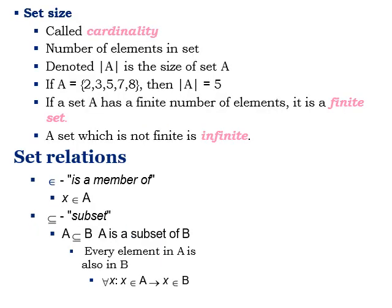Cardinality refers to the number of elements in a set, denoted using absolute value-like symbols representing the size of a set. For example, if A = {2, 3, 5, 7, 8}, then the cardinality of A equals 5. If a set A has a finite number of elements, it is a finite set. A set which is not finite is called an infinite set.